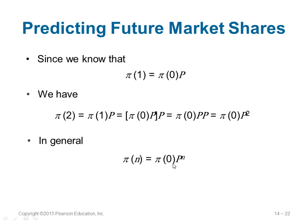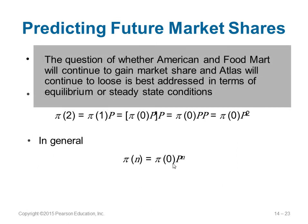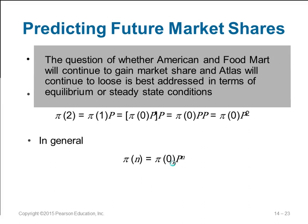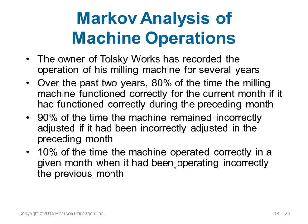What happens is this: the probabilities will keep changing up to some extent and then reach an equilibrium state, or steady state condition. After that there will be no change in the probability. For example, in the Tokski Works company problem: 80 percent of the time a machine working correctly this month will also function next month, and 90 percent of the time a machine incorrectly adjusted will remain incorrectly adjusted.